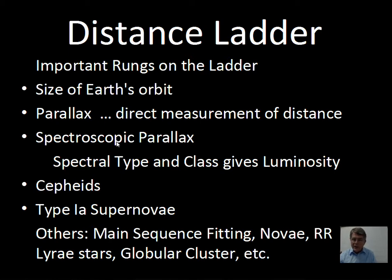Stars have a spectral type — G2, and a luminosity class of five, two, or one if they're a supergiant. These two pieces of information give the luminosity of a star and allow distance to be calculated. Then we have the Cepheid stars: period and luminosity are related for Cepheid stars. It's easy to measure the period for one of these stars as long as you can isolate it. You measure the period, that gives you luminosity, and then Cepheid variables are useful in calibrating the Type 1a supernova brightness.